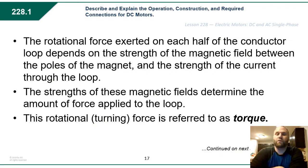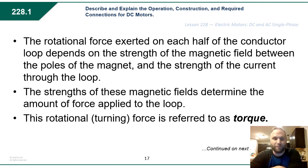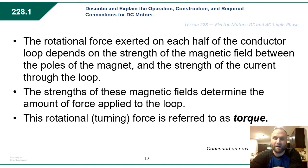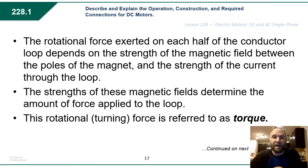This rotational force exerted on each half of the conductor loop depends on the strength of the magnetic field between the poles of the magnet and the strength of the current through the loop. The stronger the magnet and the greater the current passing through the loop, the more rotational force — meaning more speed or more strength. The strength of these magnetic fields determines the amount of force applied to the loop. This rotational turning force is referred to as torque.